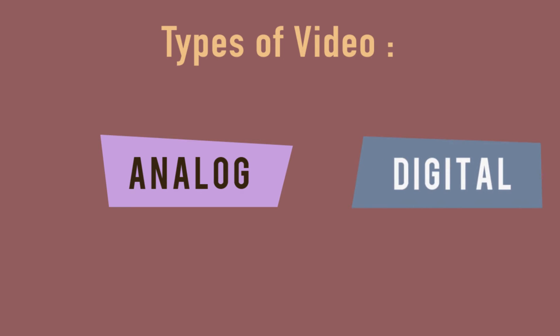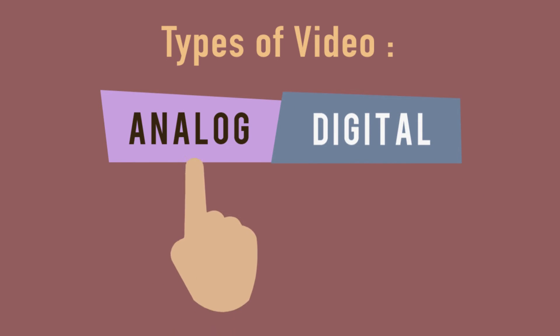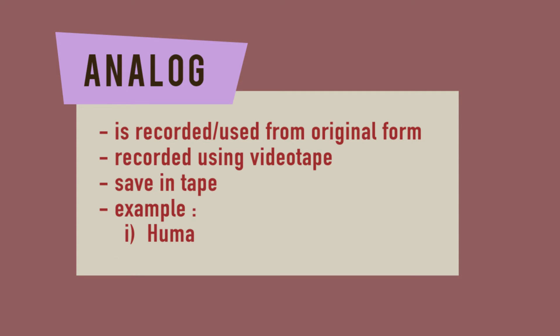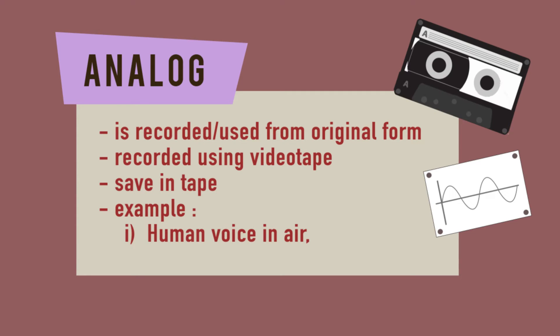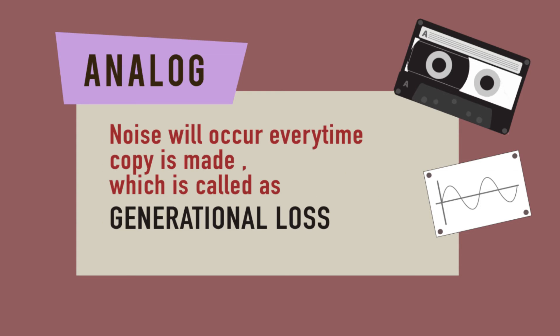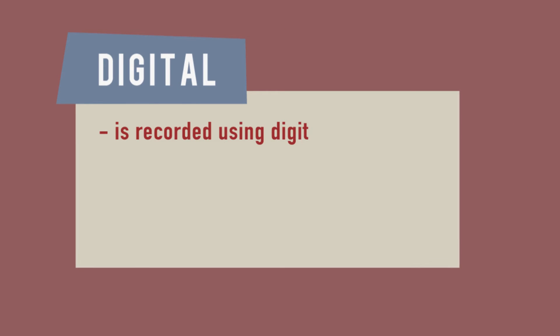There are two types of video, which are analog and digital. Analog is recorded or used from its original form, while digital is recorded by using digital devices.